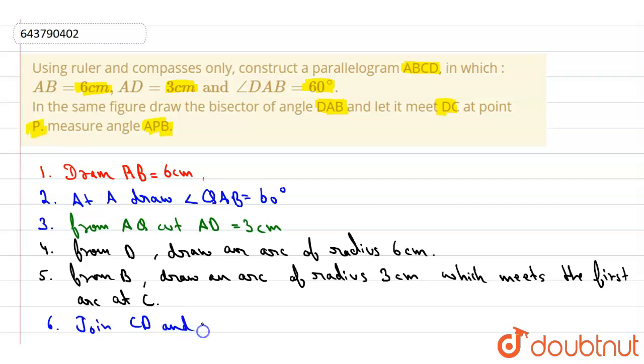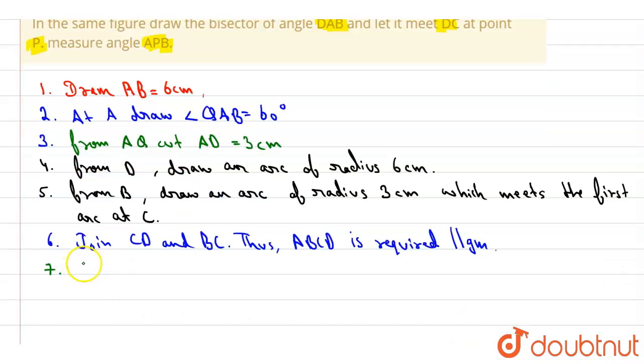Thus ABCD is required parallelogram. As a seven, bisect angle DAB so that bisector meets CD at P. As a final step, join PB and measure angle APB.